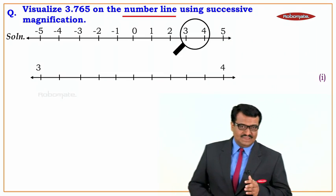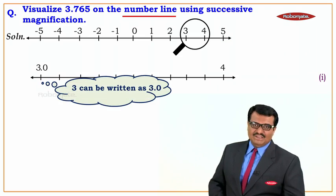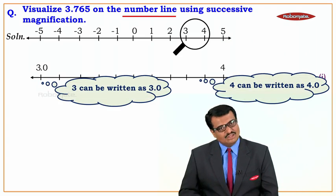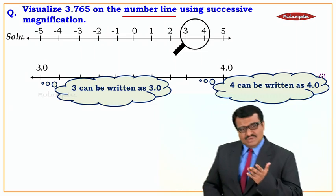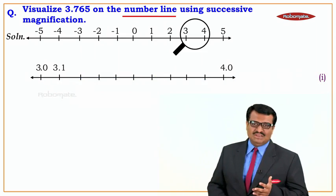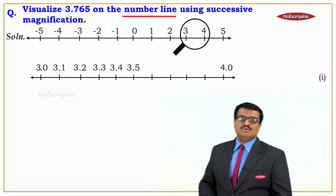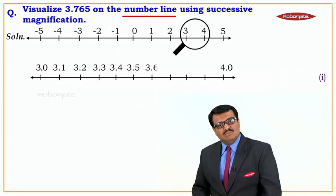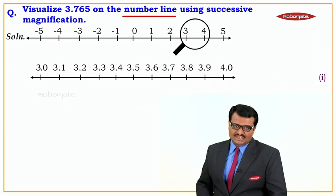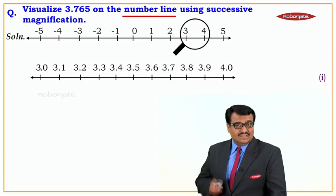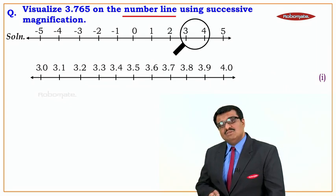3 can also be written as 3.0 and 4 can also be written as 4.0. So after 3.0 the numbers will be 3.1, 3.2, 3.3, 3.4, 3.5, 3.6, 3.7, 3.8, 3.9, and the last is 4.0. The number given to us is 3.765, which lies between 3.7 and 3.8.